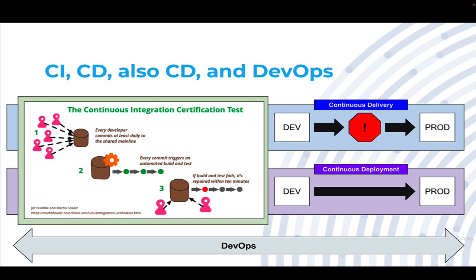Beyond that, we have Continuous Deployment, where that code change gets automatically built, tested, and deployed from environment to environment automatically with no stops in the middle. This requires, obviously, high maturity CI and CD — otherwise you would just be breaking production more quickly. This may seem scary, but consider that this is how major players like Netflix are delivering value very quickly by deploying to production up to 100 times per day.